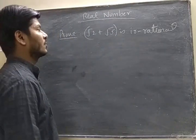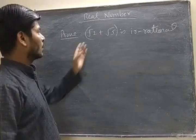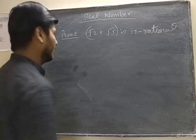Hello friends, aaj hum ek question solve karenge. Prove that root 2 plus root 5 is irrational.